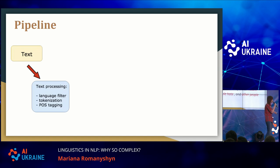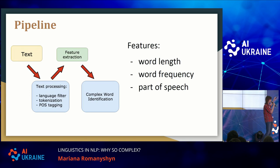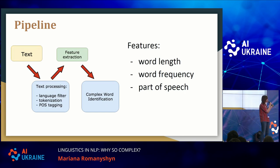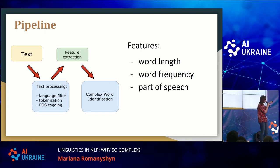This means we will need better data, and in our task we had to re-annotate some of the corpora. So what would we do? We take the text, do some text processing — make sure the text is in the language we're working on, like English — then tokenize the text and find parts of speech for each token. Then we do some feature extraction. The intuition tells us that complex words are long words that are rare — of lower frequency — and part of speech could be useful too.